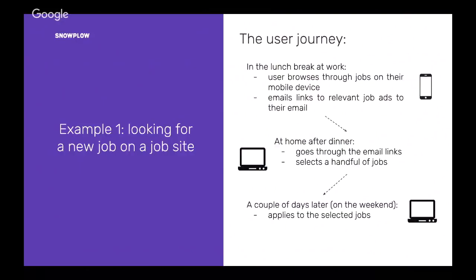For the first example, consider a simple scenario: someone's at their job, they don't really like it. In their lunch break they're looking on their phone at different jobs, but they don't want to get them up on their laptop during work. So they just send links of all the jobs they like to their own private email. Then they get home in the evening, look through those email links, select the handful of jobs they really like the look of, maybe do some more browsing on the site. And then a couple of days later — maybe it's the weekend — they've got more time, go into those jobs in more detail and maybe send off some applications.